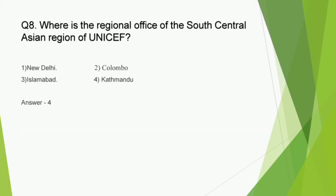Question number 8: Where is the regional office of the South Central Asian region of UNICEF? Options are New Delhi, Colombo, Islamabad, Kathmandu. The correct answer is option 4, Kathmandu.